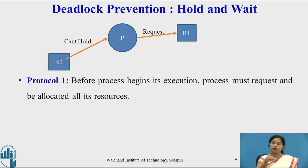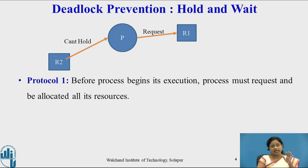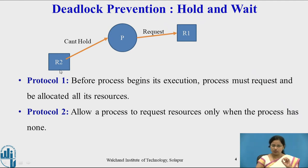Protocol 1 states that before a process begins its execution, it must request and be allocated all of its resources. So before execution starts, the process must request all resources it requires for its lifetime, and those resources are allocated to it. Protocol 2 allows a process to request a resource only when it has none — for example, process P will use resource R2, release it, and only then request the next resource.